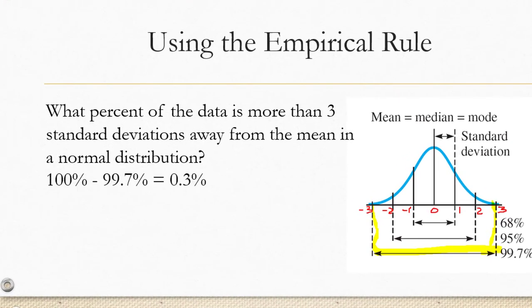Well, 100% of the data is underneath the curve. We're going to take away the data that's between negative three and three, which is 99.7% of the data. So 100 minus 99.7 is 0.3%.